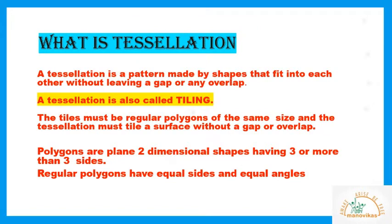Now, let us see what you mean by tessellation. A tessellation is a pattern made by shapes that fit into each other without leaving a gap or any overlap. A tessellation is also called tiling. The tiles that we use must be regular polygons of the same size, and the tessellation must tile a surface without any gap or overlap.